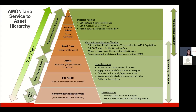Here's an example of what a service-to-asset hierarchy looks like. The top of the hierarchy provides the right aggregation of assets for strategic decision making and sustainability planning, while the lower sections of the hierarchy provide the details needed for project planning, lifecycle management, and costing.